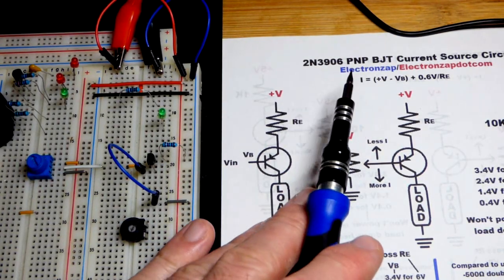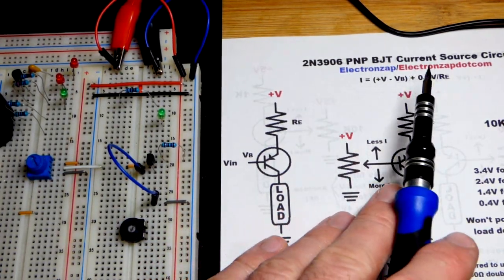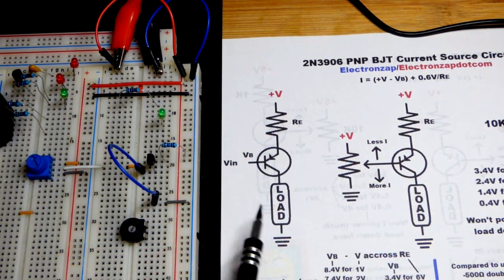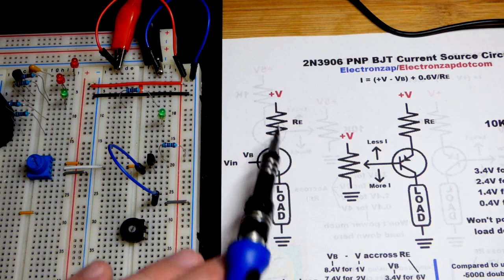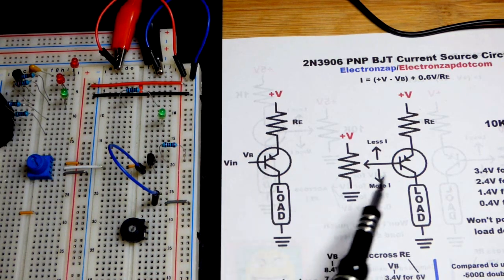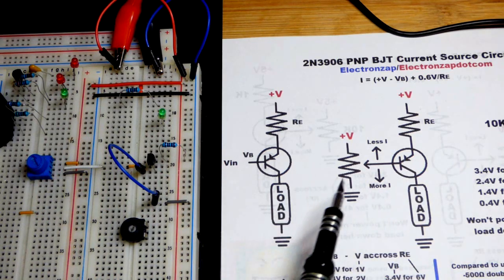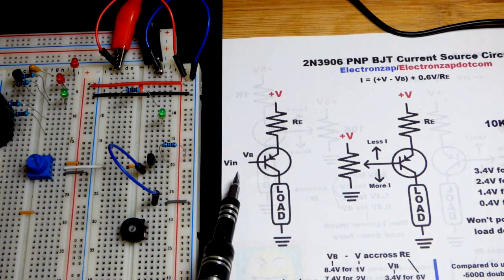In this video, we're going to look at a PNP bipolar junction transistor wired as a current source. So this is the more basic version that I drew up, you'd probably see that. This is closer to the circuitry we'll be looking at and I have an even more detailed schematic off to the right.